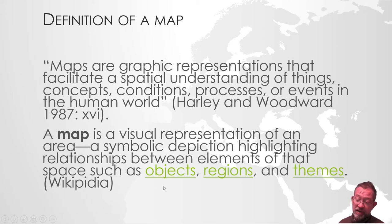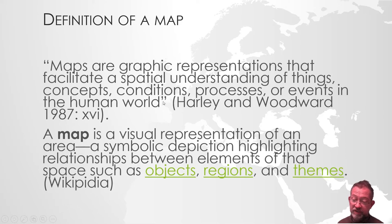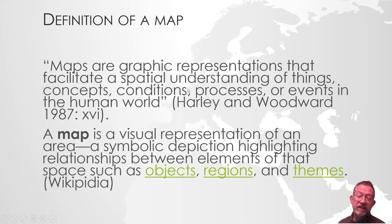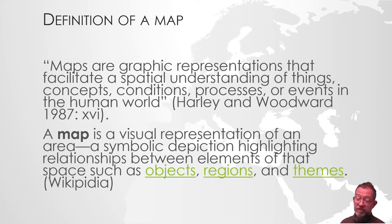Furthermore, I personally don't like the Wikipedia definition because it talks about objects, regions and themes, which are specific representation forms. So, it requires a map to use some specific representation forms. That is not part of what we see in Harley and Woodward's definition — there is no criteria saying that this or that type of representation form must be used. So, Harley's is a bit more open, while Wikipedia's is a bit more strict.